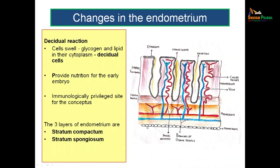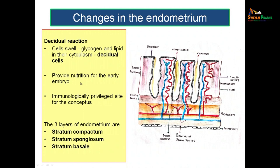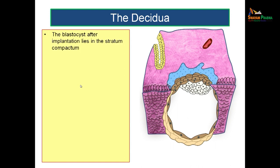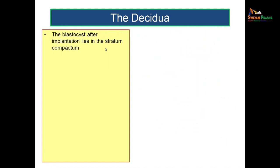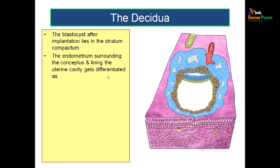The three layers of endometrium are stratum compactum, stratum spongiosum, and stratum basale. Stratum compactum and stratum spongiosum together are known as stratum functionalis. The blastocyst gets implanted in the stratum compactum layer, reaching up to the superficial part of the stratum spongiosum.